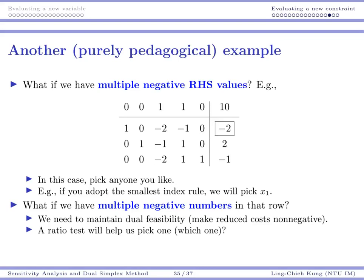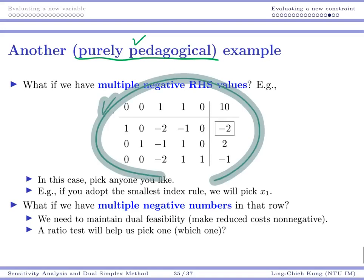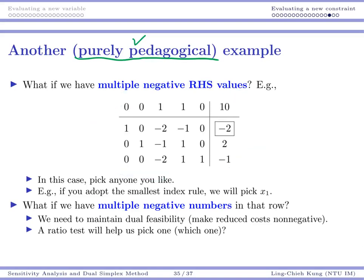That example was somehow easy, but there are some other situations that we need further consideration. So let's see this purely pedagogical example here. I say it is pedagogical because I just need some numbers to show you the process. This tableau looks somehow similar to the previous one, but it has nothing to do with that particular example. We're not changing that example to this one; we have a new example here. Suppose we run the simplex method to some optimal tableau, and somehow after we add a new constraint or another new constraint or whatever, somehow we get multiple negative right-hand sides at the same time.